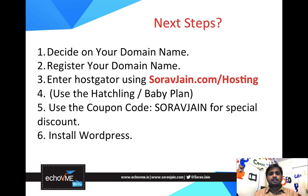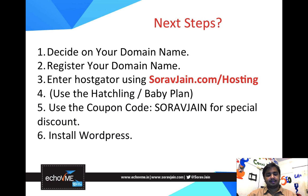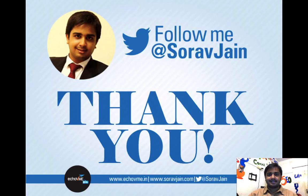So we will now decide on your domain name, register it, and enter HostGator using sorokjain.com/hosting. Pick up a baby plan or the hatchling plan. You can use the coupon code for a special discount. We will learn about installing WordPress in our next session. Thank you so much — I hope you enjoyed today's session. It was short and crisp, and I hope to quickly get into the practical session after this.